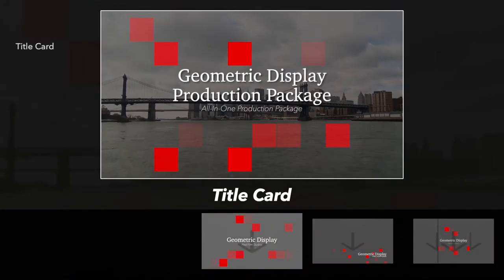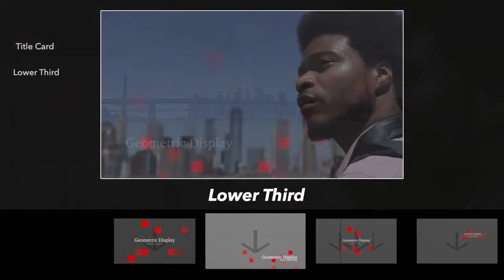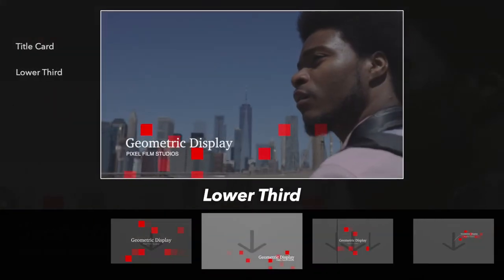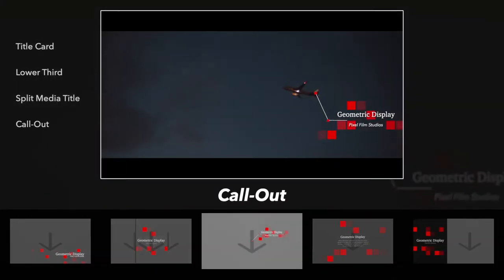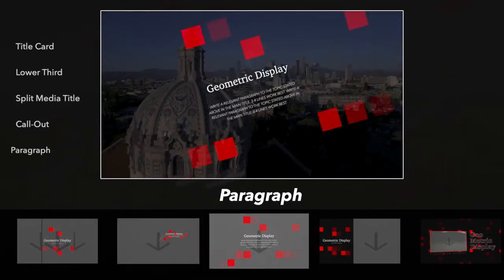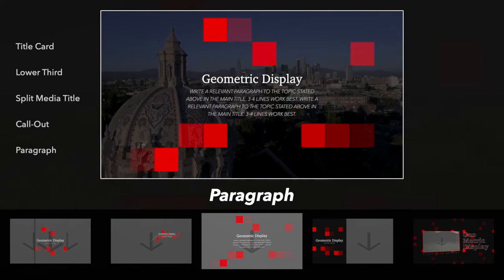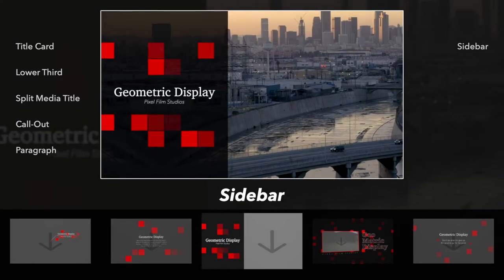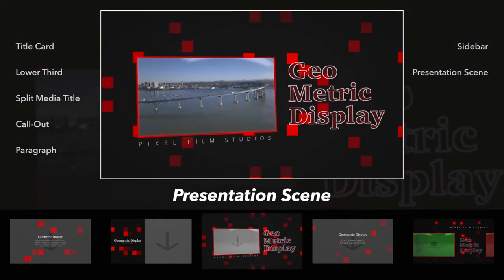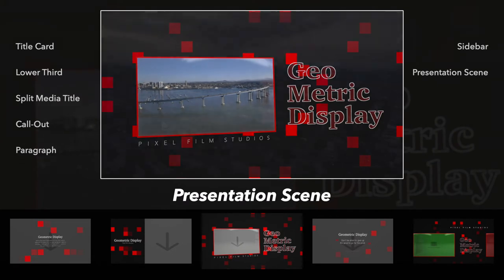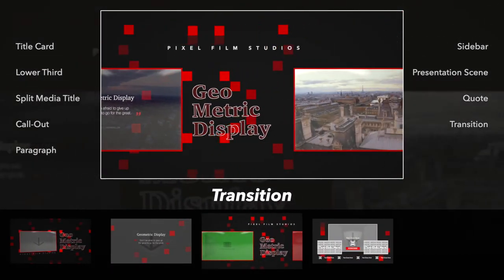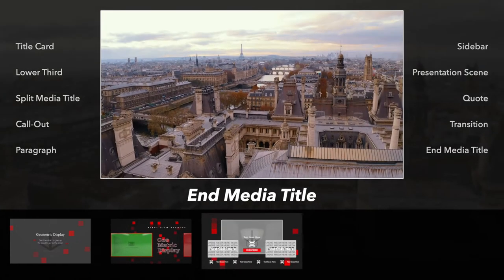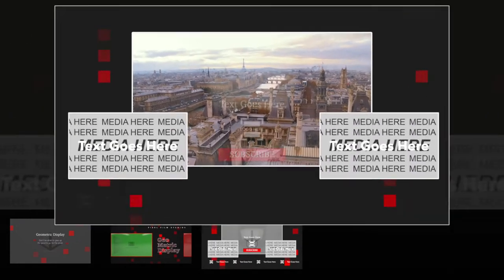Production package includes title card, lower third, split media title, call out title, paragraph, sidebar, presentation scene, quote, transition, and an end media title — for all digital content creators.